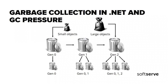The garbage collector manages all the allocation and release of memory of your application. Each time you create a new object, the CLR allocates memory for the object from the managed heap. If the added space is available in the managed heap, the runtime continues to allocate space for new objects. However, memory is not infinite. Eventually, the garbage collector must perform a collection in order to free some memory. In large applications, the number of objects the garbage collector needs to deal with can become very large, which means it can take a very long time to visit and rearrange all of them.